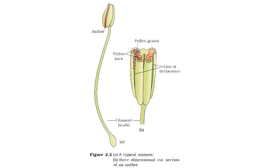To give an example to help understand: just like lady finger (bhindi), when it dries out completely, it splits open along a single line — that is the line of dehiscence — and its seeds come out. The same thing happens in the anther. When it is time for pollen grain release, the anther becomes fully dehydrated, and it ruptures along the line of dehiscence or line of rupture, releasing the pollen grains outside.